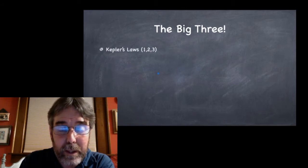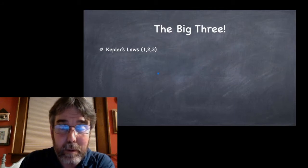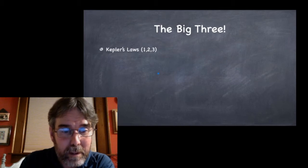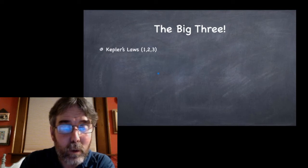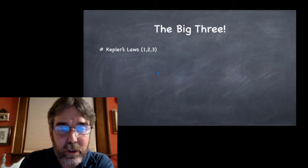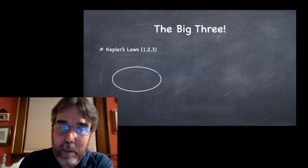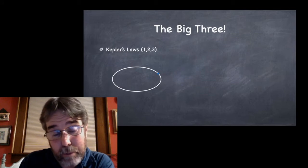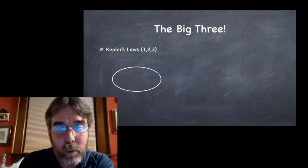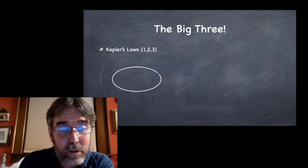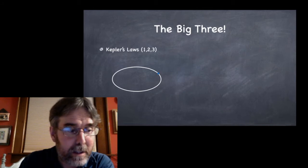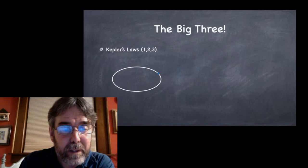First of all, Kepler realized that by looking at a lot of data that was collected by his prior employer, Tycho Brahe, he analyzed a lot of data and realized he was the first to realize that planetary orbits are actually elliptical, not circular. Aristotle was stuck on circles, Copernicus adopted circles, Tycho Brahe pretty much believed in the circle thing, and it was Kepler who really broke the mold and discovered that elliptical orbits were a better description.